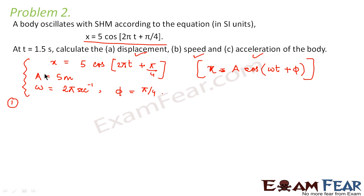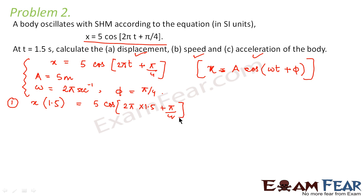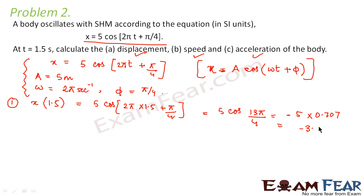In the first part, we calculate displacement at t = 1.5 s by substituting: x = 5 cos(2π × 1.5 + π/4) = 5 cos(13π/4). From trigonometric tables, cos(13π/4) = −0.707, so x = 5 × (−0.707) = −3.535 meters. This is the displacement at t = 1.5 seconds.